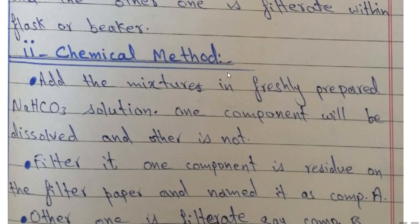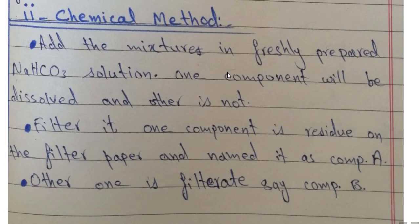If you cannot separate using the physical method, then you go to the chemical method. In the chemical method, we prepare a saturated sodium bicarbonate solution in a beaker. We add the mixture to it and dissolve it. We can see that some components dissolve. If we don't get a clear result, we filter it.